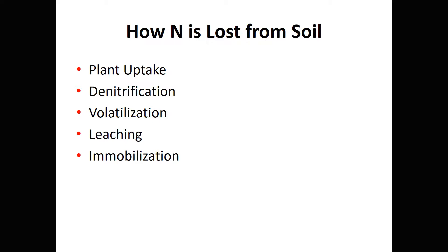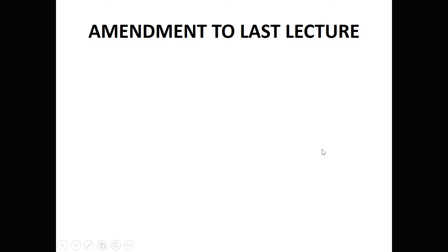Welcome to lecture three: how nitrogen is lost from the soil. This is the nitrogen cycle series presented by Howard Brown. Today we're going to talk about how nitrogen is lost when considering the nitrogen cycle. The avenues of loss include plant uptake, denitrification, volatilization, losses of gas, leaching — movement with water — and immobilization. With immobilization, it really doesn't go away; it just gets tied up in a form the plant cannot utilize.